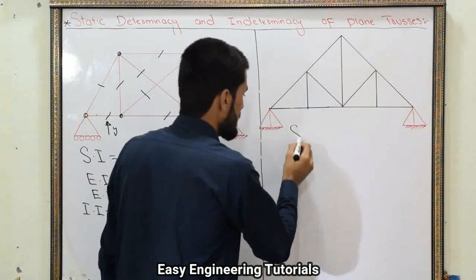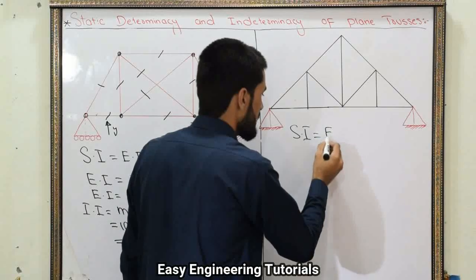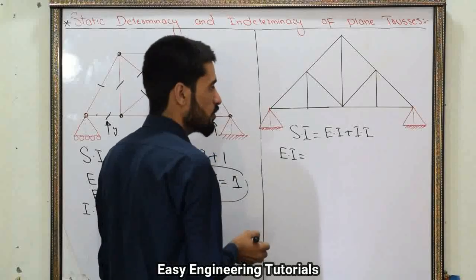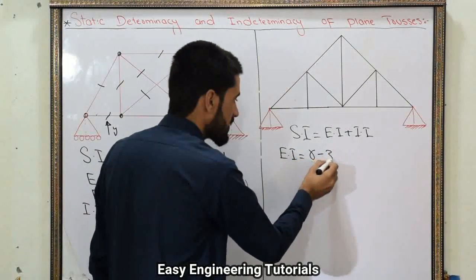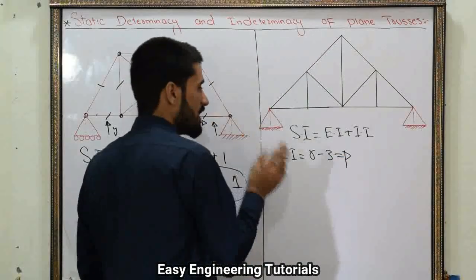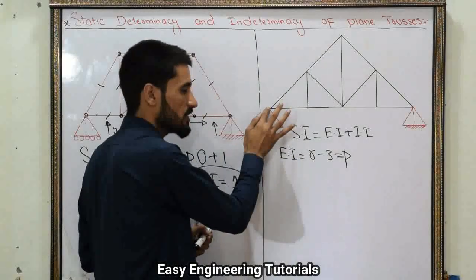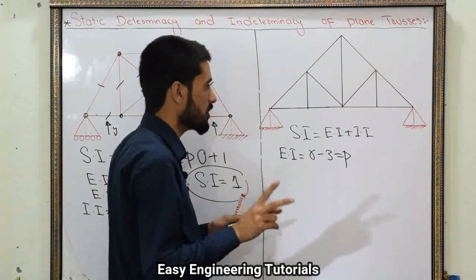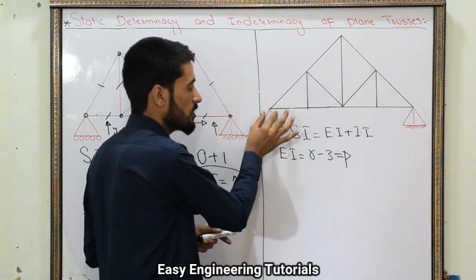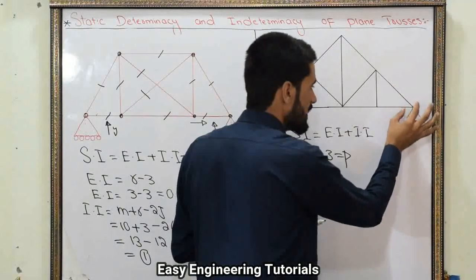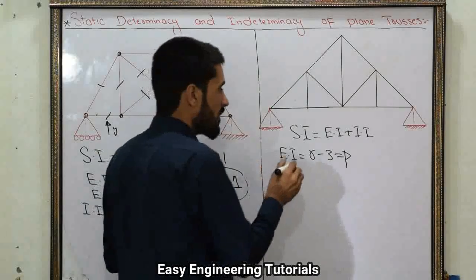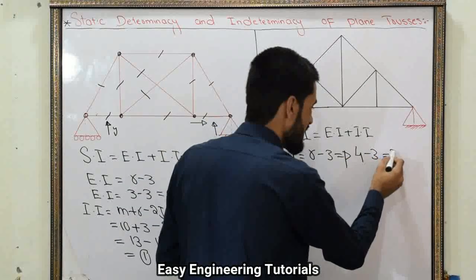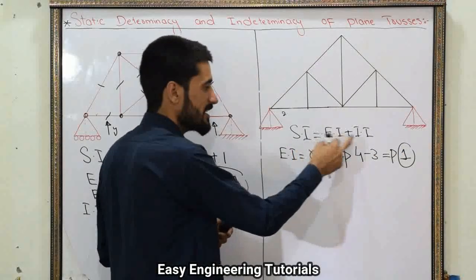Now let us move to example number 2. Static indeterminacy equals external indeterminacy plus internal indeterminacy, where external indeterminacy equals R minus 3. Here one side of the truss is hinged and the other side is also hinged. A hinge support provides 2 unknown reaction forces, so total R equals 2 plus 2 equals 4. So external indeterminacy equals 4 minus 3 equals 1.